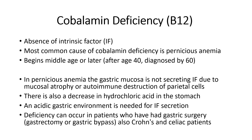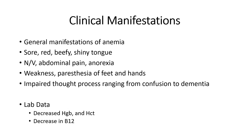B12 deficiency also occurs in patients who've had gastric surgeries (gastric bypass, gastrectomies), Crohn's disease, celiac disease, alcohol use disorder, and smoking. Patients present with general anemia manifestations plus a sore, red, beefy, shiny tongue; nausea, vomiting, abdominal pain, anorexia; weakness and paresthesia (pins and needles in extremities); and impaired thought process ranging from confusion to severe dementia — all related to tissue hypoxia from poor oxygenated blood.